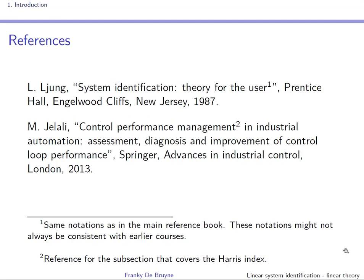The main reference for this course is the book 'System Identification: Theory for the User' by Lennart Ljung, and I follow the notations in that reference. The notations might differ from those used in previous courses, but this is something you have to get used to when tackling a new topic. It is a very good reference if you want to go further than what is done in this course.